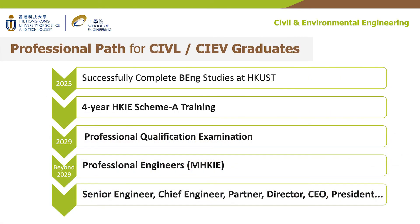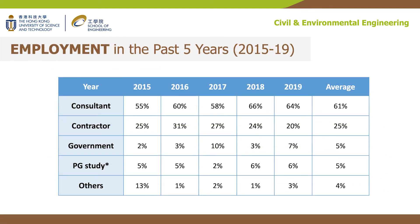This shows the professional path of our civil engineering graduates. If admitted to our program at Hong Kong University in 2021, you will graduate in 2025 and can start the four-year HKIE Scheme A training. After four years, you can become a professional engineer chartered under HKIE. Afterwards, you can be further promoted to senior engineer, chief engineer, or even partner and director of different engineering firms.